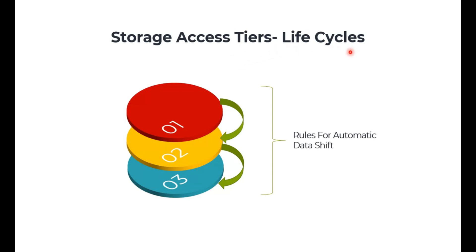There is also a data lifecycle concept. You can automatically move data from hot to cold and cold to archive storage. For example, move data older than six months to cold storage, and after another six months move it to archive. This automatic provisioning is very useful for cost management, because keeping all data in hot tier is not cost effective. Automatic rules can be created to move data from one access tier to another.